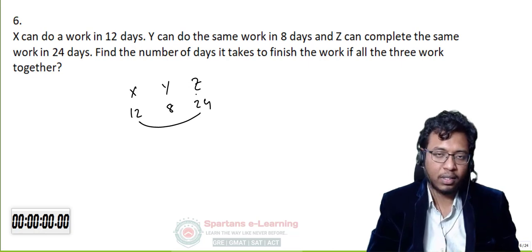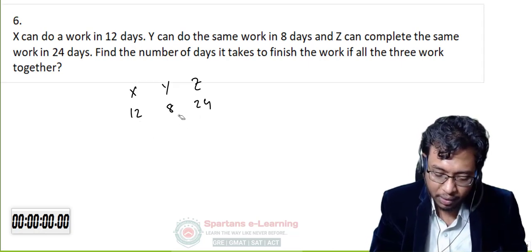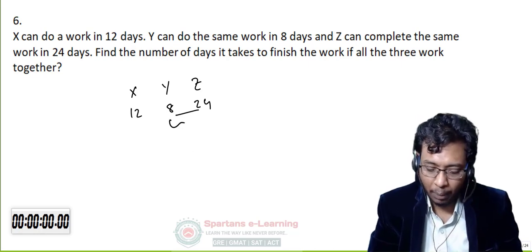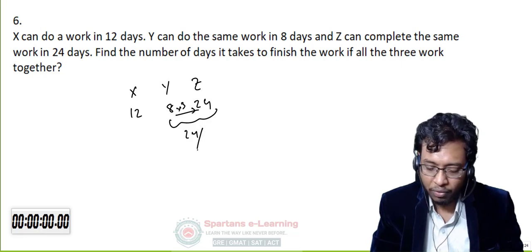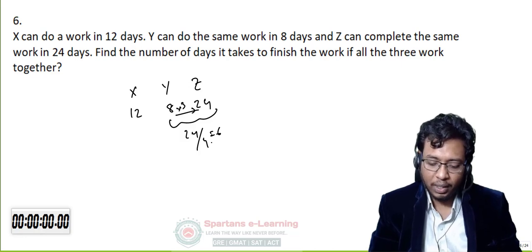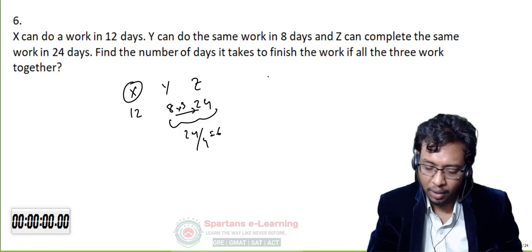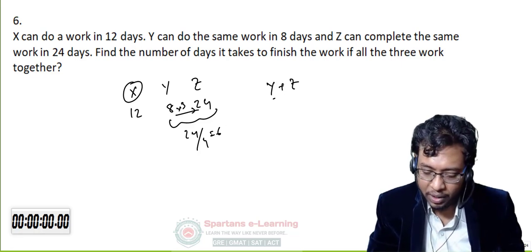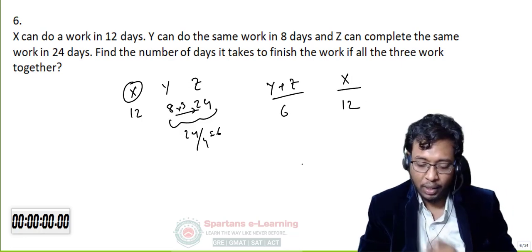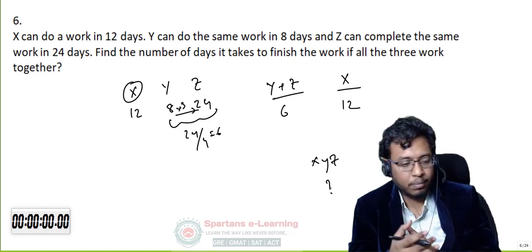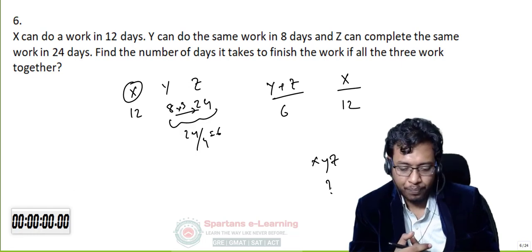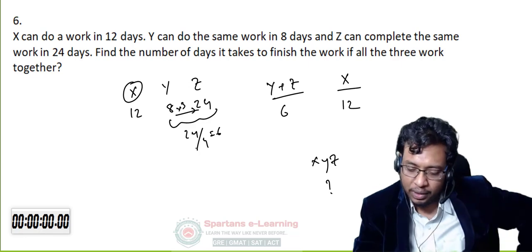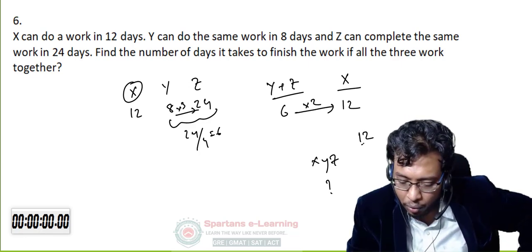Step by step: I take Y and Z first. Y = 8 days, Z = 24 days. 8 × 3 = 24, so Y+Z = 24/4 = 6 days. Now X = 12 days and Y+Z = 6 days. 6 × 2 = 12, so X and (Y+Z) combined = 12/3 = 4 days. That means X+Y+Z finish the work in 4 days.